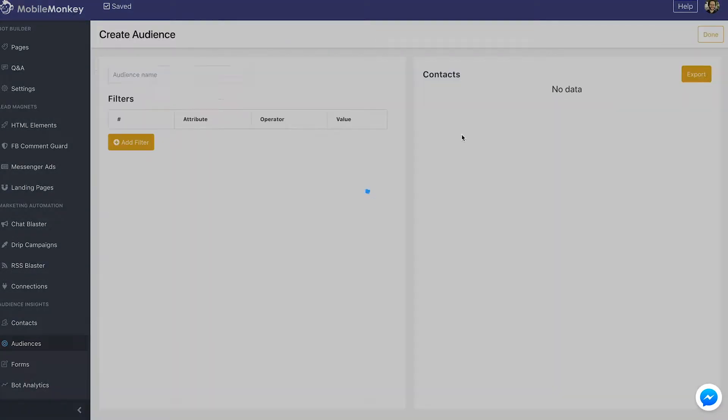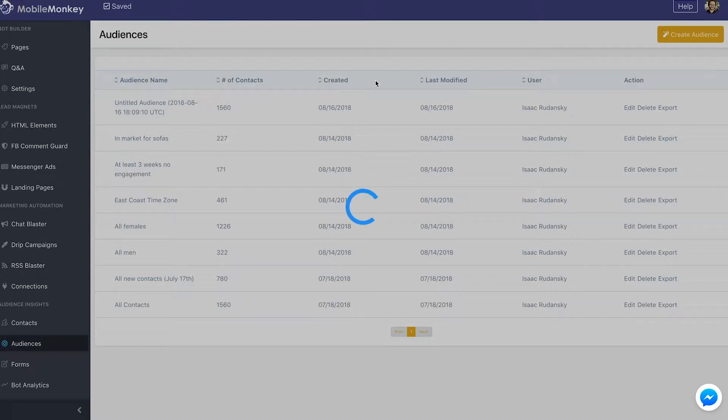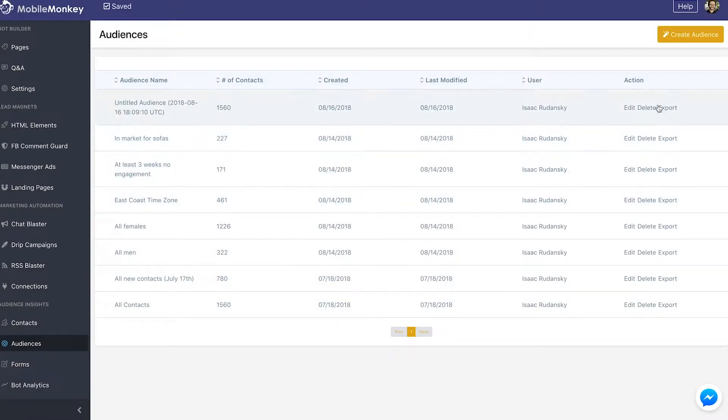Creating new audiences is done through this yellow button up here on the right-hand side. Adding filters to narrow down your audience by custom attributes is done here, and you can also export individual audiences by clicking the export button on any one of these audiences. You'll then get a CSV file of just that audience.